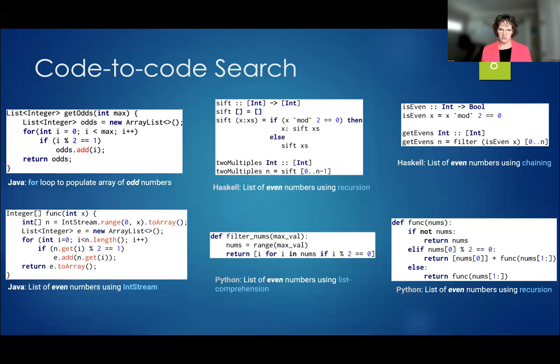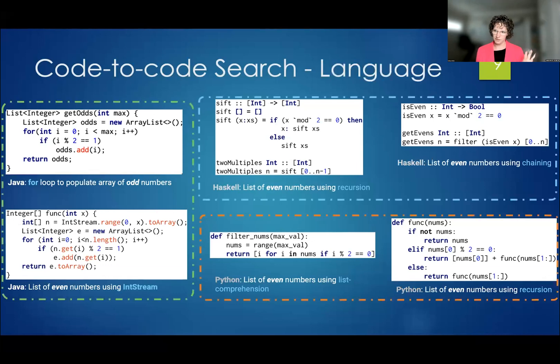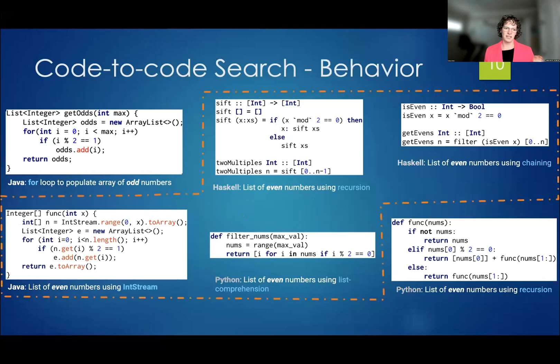And these snippets all exist on GitHub and they have some similarities. So there are three languages that are represented here. Some of these have same behavior. Others have similar behavior. As in under some inputs, they behave the same. Under other inputs, they behave differently. And then we have other, depending on how you chunk it, the behavior can also be the same.